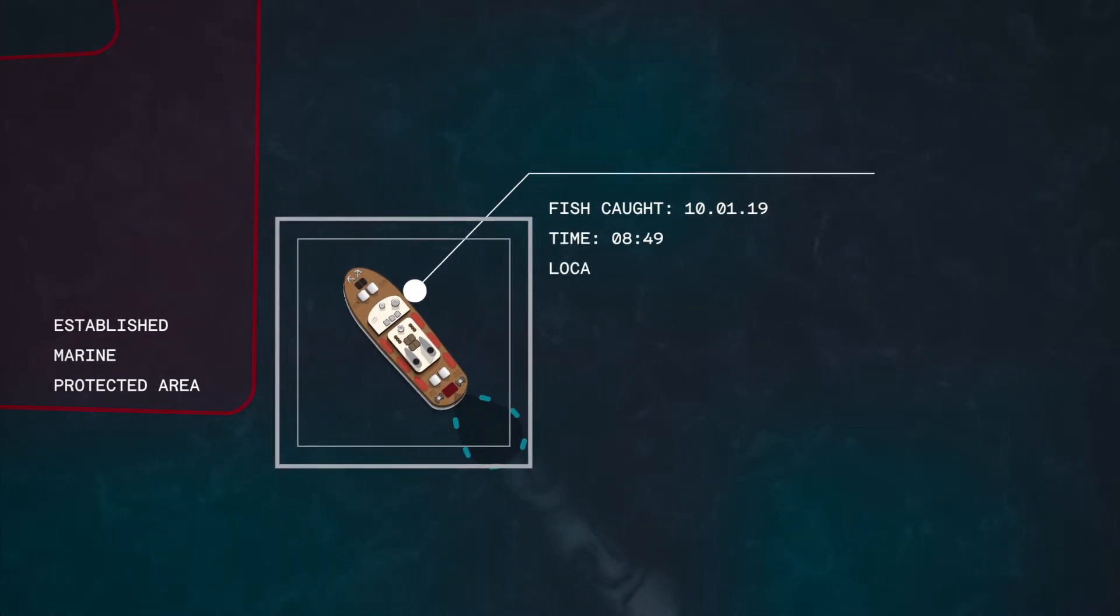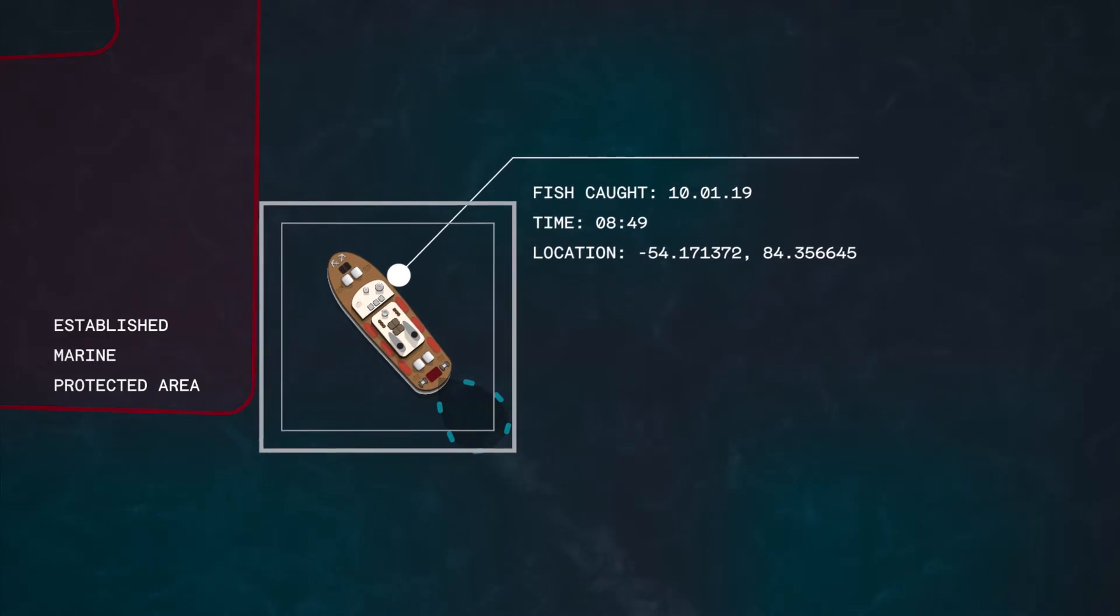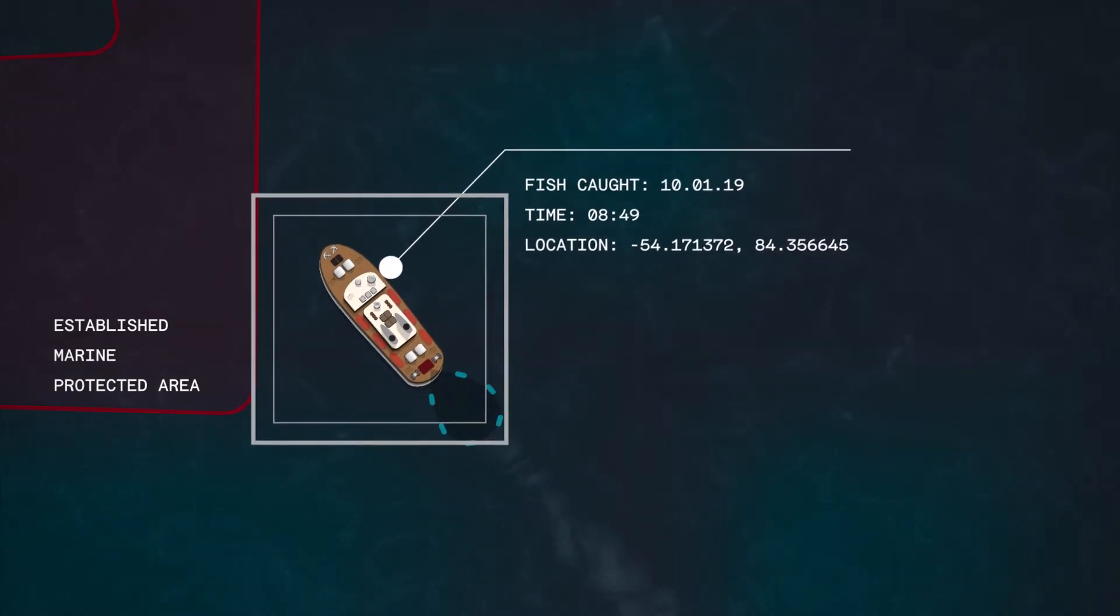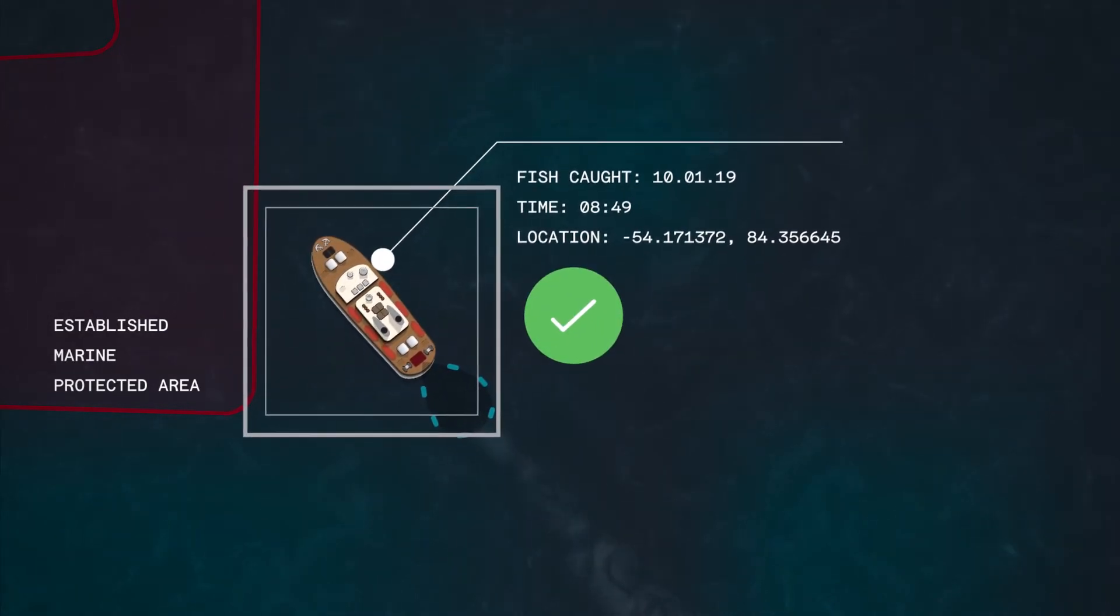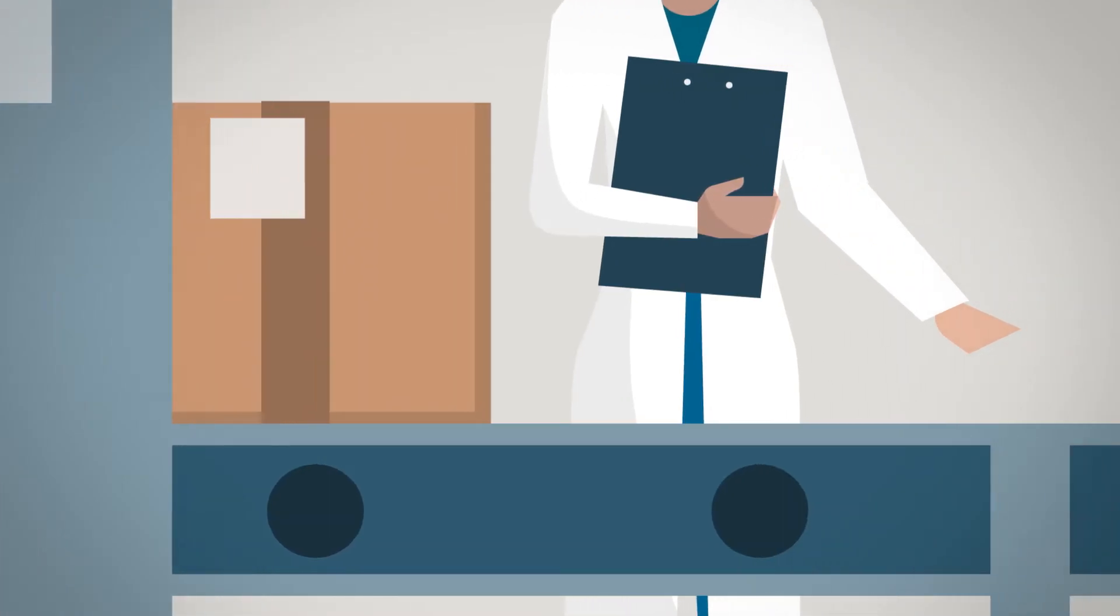OpenSC has developed a machine learning algorithm that uses the GPS location of participating boats and additional data sets to verify that fish are caught in government regulated and marine stewardship council certified areas.